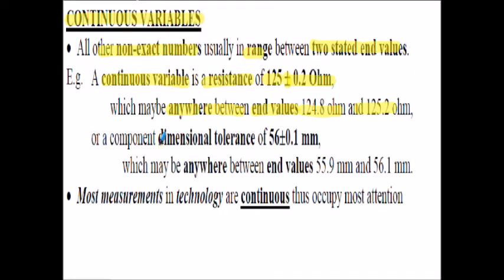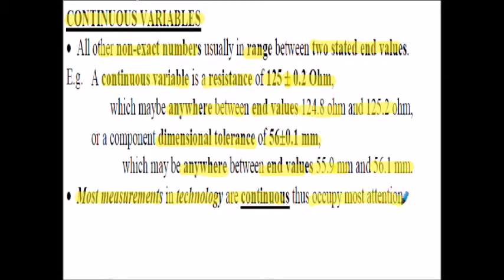Another example - a dimensional tolerance might be 56 plus or minus 0.1 millimeters. In other words, we mean the value of the dimension can be anywhere between the end values of 55.9 millimeters and 56.1 millimeters. Most measurements in manufacturing technology are continuous and within statistics, these occupy most of our attention.